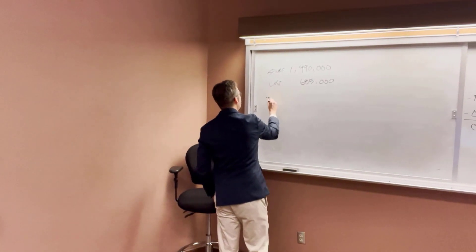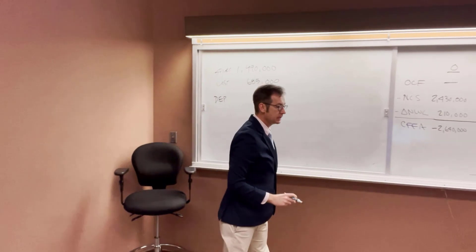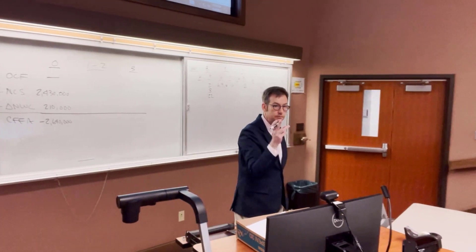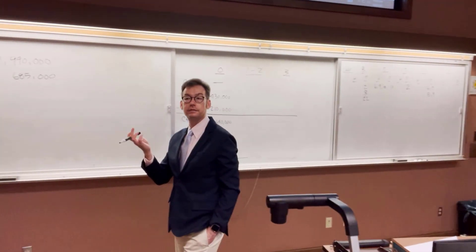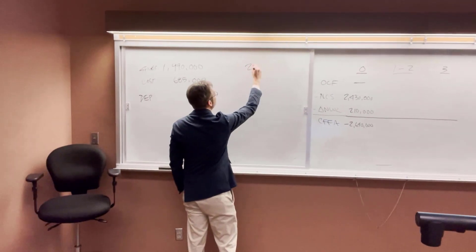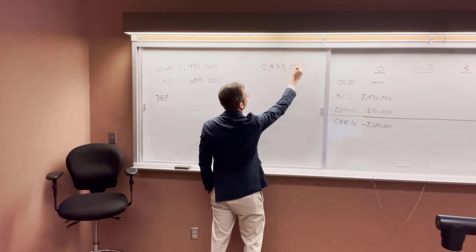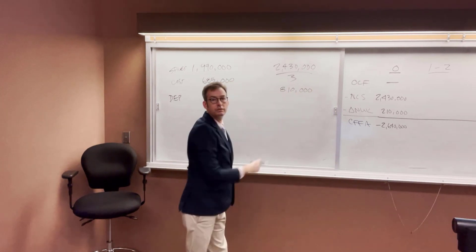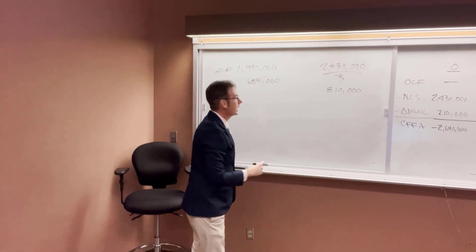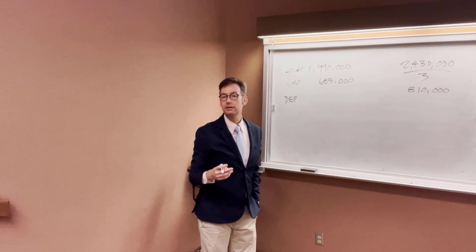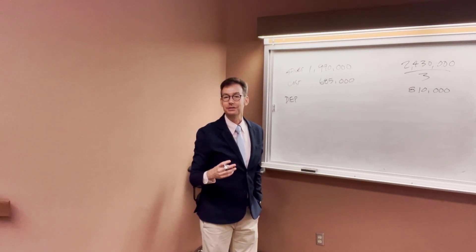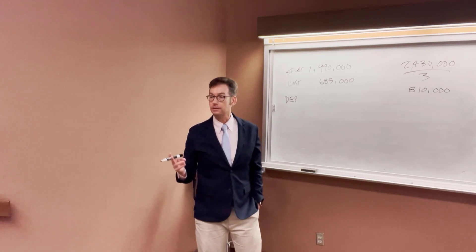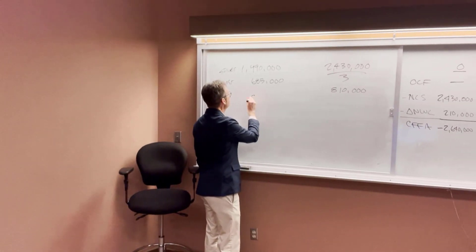We have to put depreciation in, but we need to calculate it first. The asset costs $2.43 million, depreciated straight line to zero over three years. So depreciation is $2.43 million divided by three, which is $810,000. We subtract costs and depreciation to get pre-tax income: $1,990,000 minus $685,000 minus $810,000 gives us pre-tax income of $495,000.